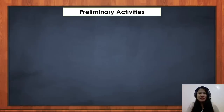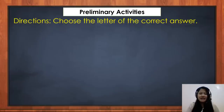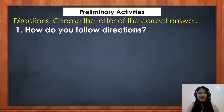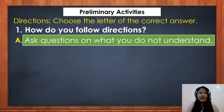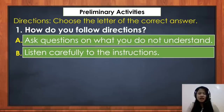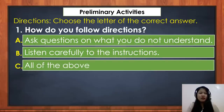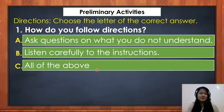For our preliminary activities, you will choose the letter of the correct answer. Ready with your show-me board. Number 1: how do you follow directions? A. Ask questions on what you do not understand. B. Listen carefully to the instructions. Or C. All of the above. The correct answer is C — all of the above — because you need to ask questions if you don't understand and listen carefully to every instruction.